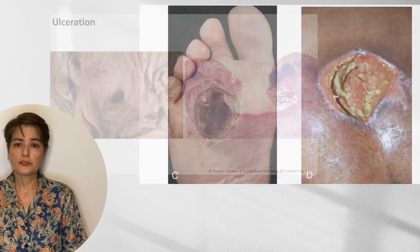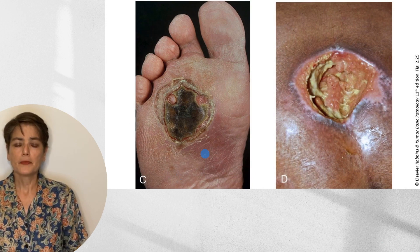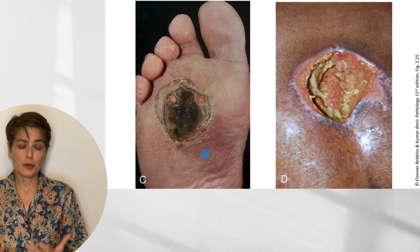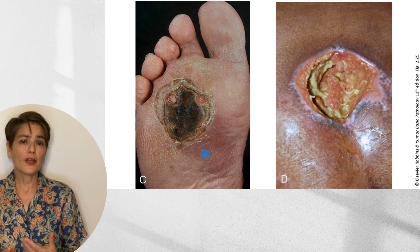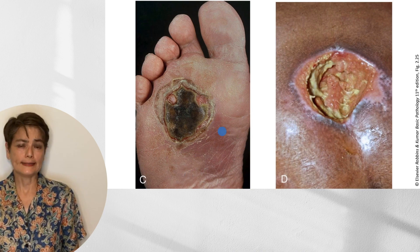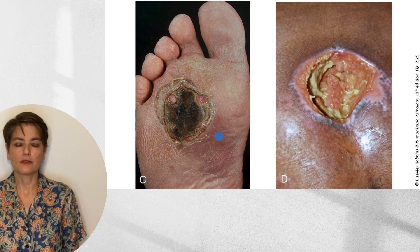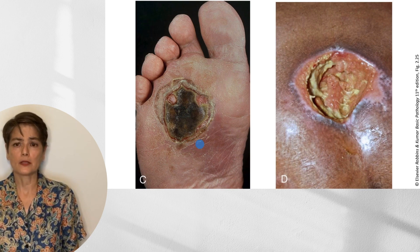We can also see ulcers in peripheral vascular disease and in debilitated patients. This is an example of a diabetic ulcer. Individuals with diabetes have peripheral vascular disease due to increased atherosclerosis, and they also have peripheral neuropathy. Whereas a patient without neuropathy would be aware of a lesion on the base of the foot, someone with diabetes might not feel any pain at all, and so this can progress and become quite large.